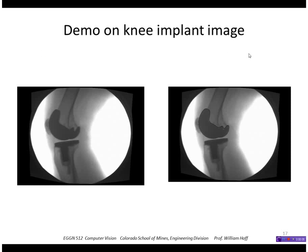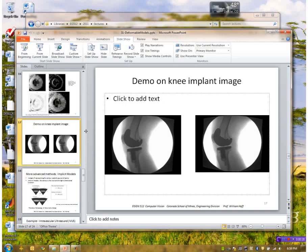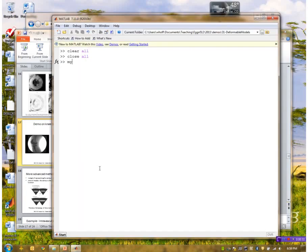I'm going to show that gradient vector field approach with software running on this image. What we're trying to do is segment out the silhouette of this knee implant — a metal implant in this X-ray image. We're going to have the user draw an initial contour and then the software will fit the contour to do that. I wrote a little program called MySnake which calls their snake software.